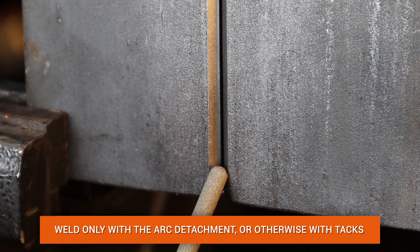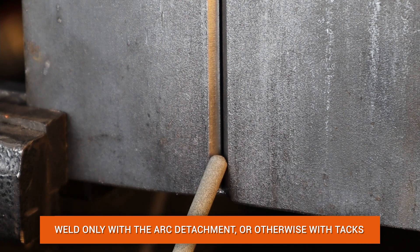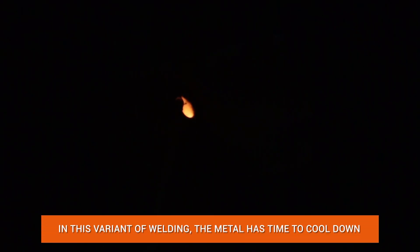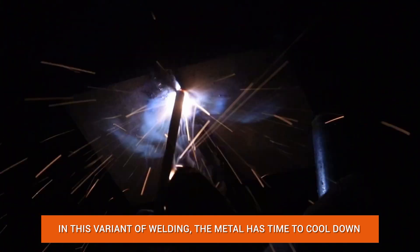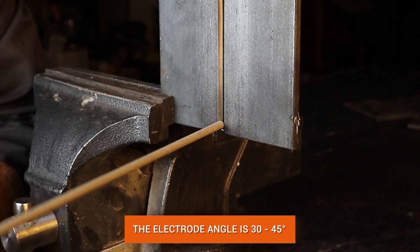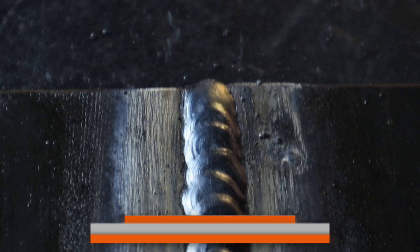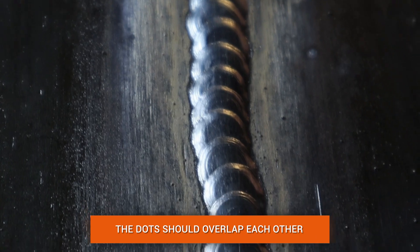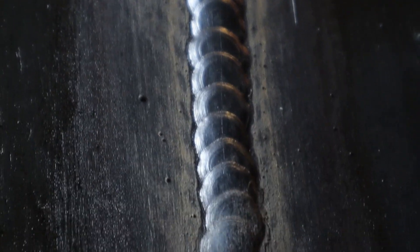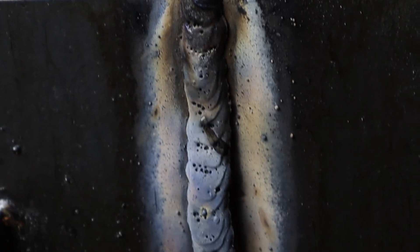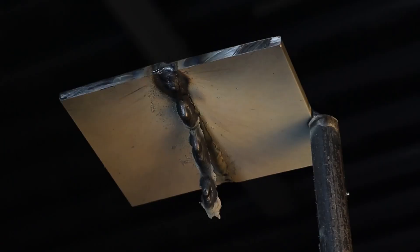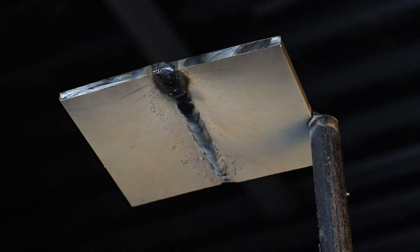Welding should be done only with the arc detachment or otherwise with tacks. The metal has time to cool down during the arc break and does not spread. The electrode angle is from 30 to 45 degrees. The main task is to keep the weld pool in the working area with smooth movements. Keep the weld pool at the optimum level of molten metal. The rollers must lie on top of each other.